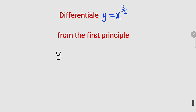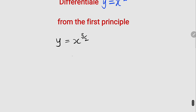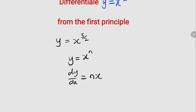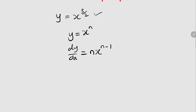So what we are given is y, which is the same as f of x, equal to x to the power of 3 over 2. The formula states that if you have y equal to x to the power of n, then dy over dx is equal to n multiplied by x to the power of n minus 1. So if we apply this formula to our function, we have y prime, which is the same as dy over dx, equal to n, which is 3 over 2, then x to the power of n minus 1, which is 3 over 2 minus 1.